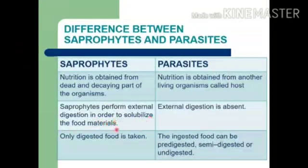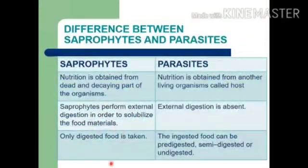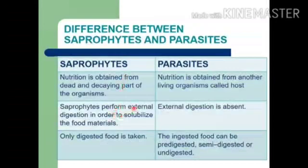Next, saprophytes perform external digestion in order to solubilize the food material. Saprophytes insert digestive juice out of it — the dead and decaying part — to solubilize and convert it into a simple form, and that is absorbed by the saprophytes. So the digestion is external. But in parasites, external digestion is absent. Only digested food is taken — when the food is digested outside the body, saprophytes absorb it.